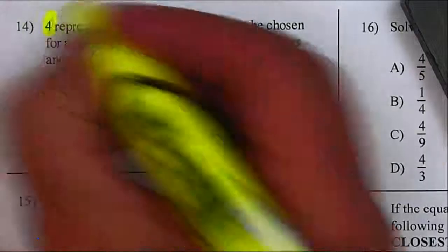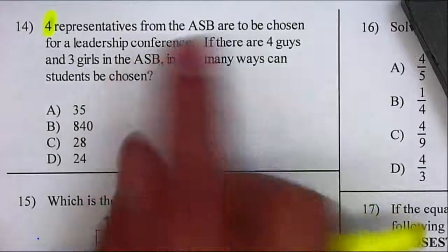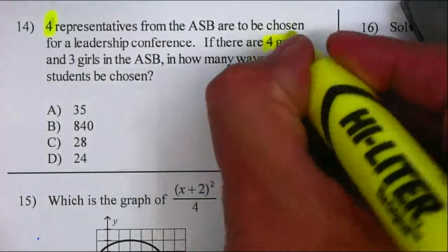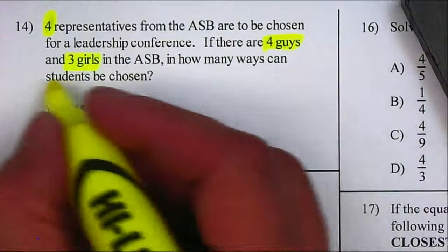We have four representatives from the ASB are to be chosen for a leadership conference. If there are four guys and three girls in the ASB, how many ways can the students be chosen?